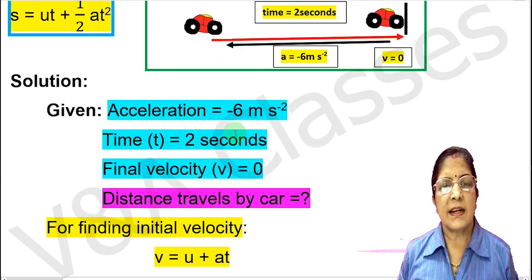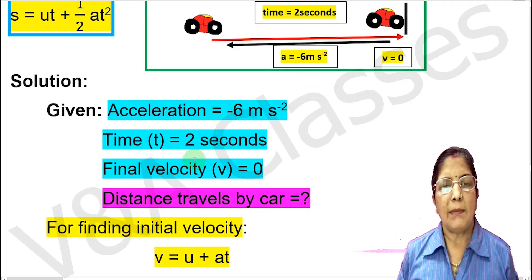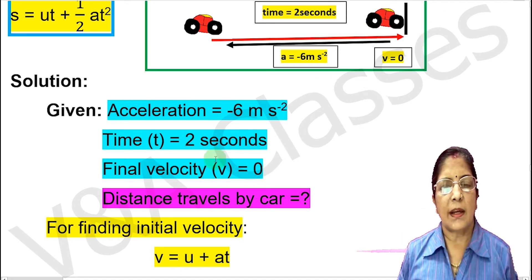Let's start the solution with the givens. Acceleration equals minus 6 meter per second square — the minus sign is because the car is decelerating. Time t equals 2 seconds. Final velocity v equals 0, because the car has stopped.